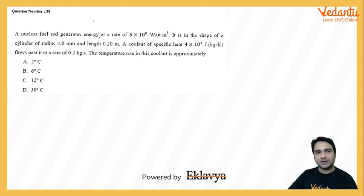A nuclear fuel rod generates energy at a rate of 5 times 10 to the power 8 watts per meter cube. It is in the shape of a cylinder of radius 4 millimeter and height 0.2 meter. So length is given and radius is given.